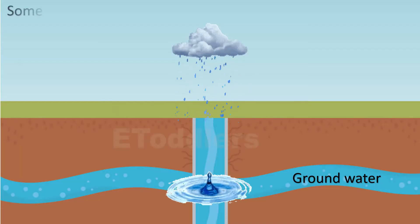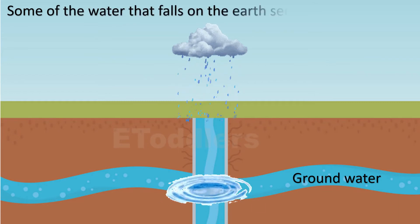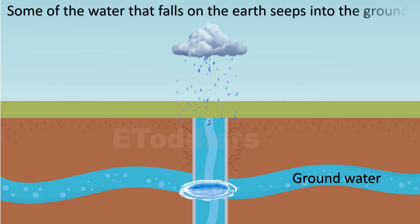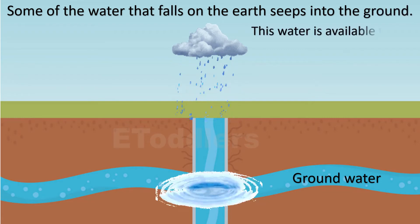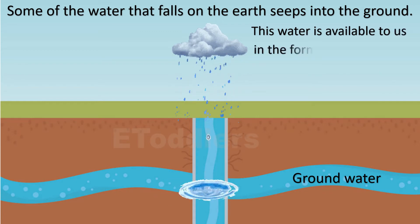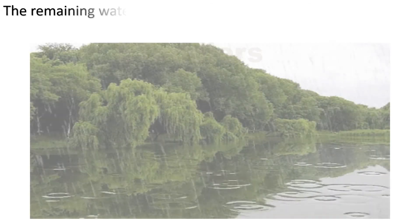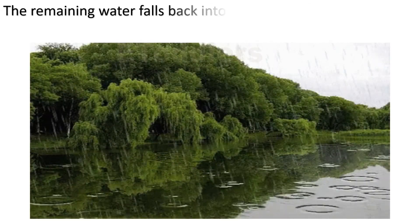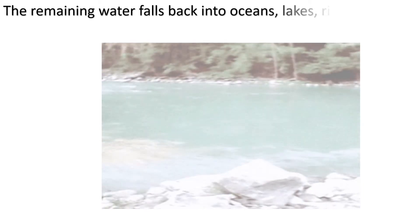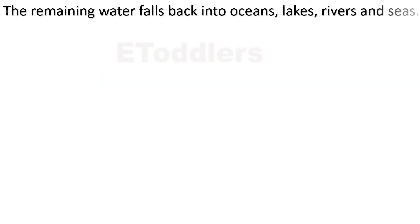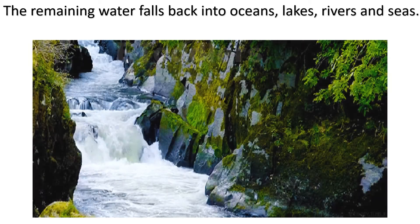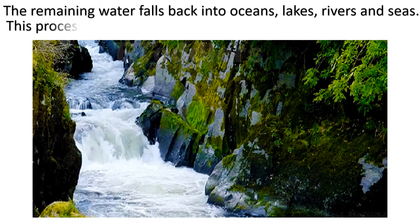Some of the water that falls on the earth seeps into the ground. This water is available to us in the form of groundwater. The remaining water falls back into oceans, lakes, rivers and seas. This process is called collection.